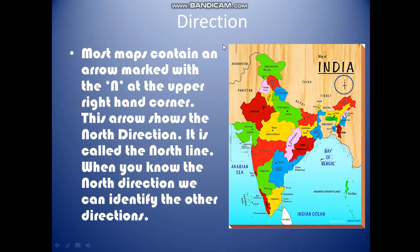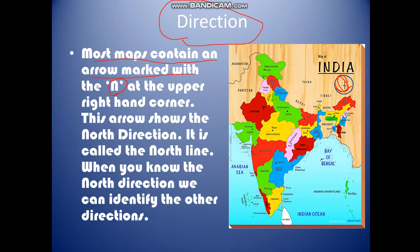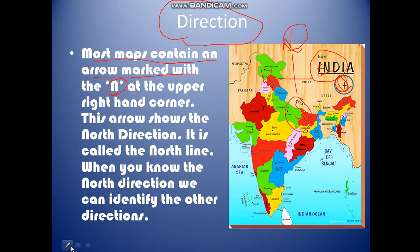What is direction? Direction has 2 parts. First is the cardinal points and the second one is the intermediate direction. Maps contain an arrow marked with N at the upper right-hand corner. By recognizing North we can recognize the other directions — on the right there is East, on the left we have West, and on the opposite of North we have South. If we know East, on the left we have North and on the right we have South.